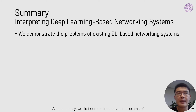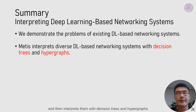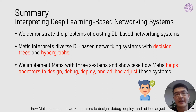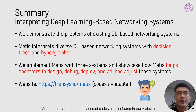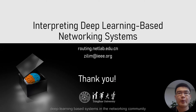As a summary, we first demonstrated several problems in existing deep learning-based networking systems. We then designed Metis, which categorizes diverse systems into local and global ones, and interprets them with decision trees and hypergraphs. In our experiments, we implemented Metis with three systems to show preliminary cases on how Metis can help network operators to design, debug, deploy, and ad hoc adjust deep learning-based networking systems. More details and open source codes can be found on our website. We hope Metis could shed light on and accelerate the deployment of deep learning-based systems in the networking community.